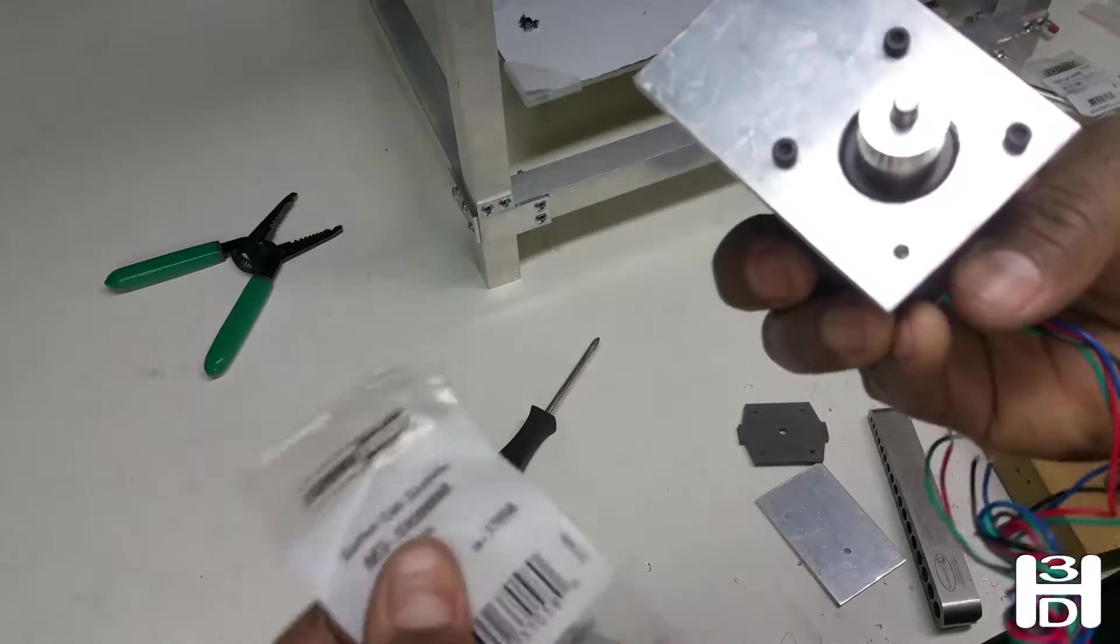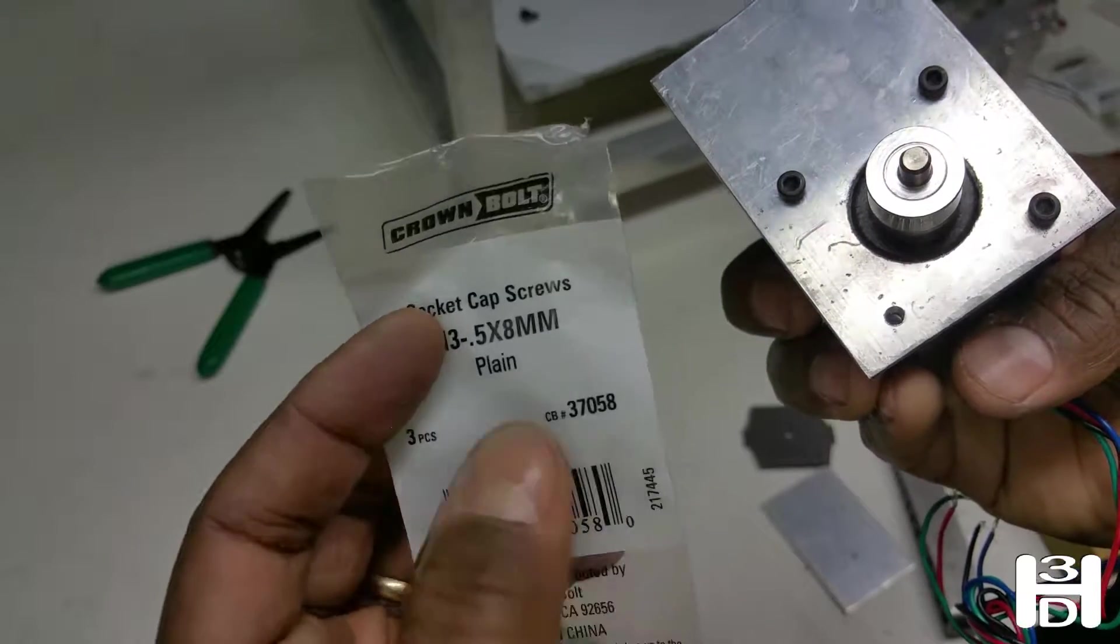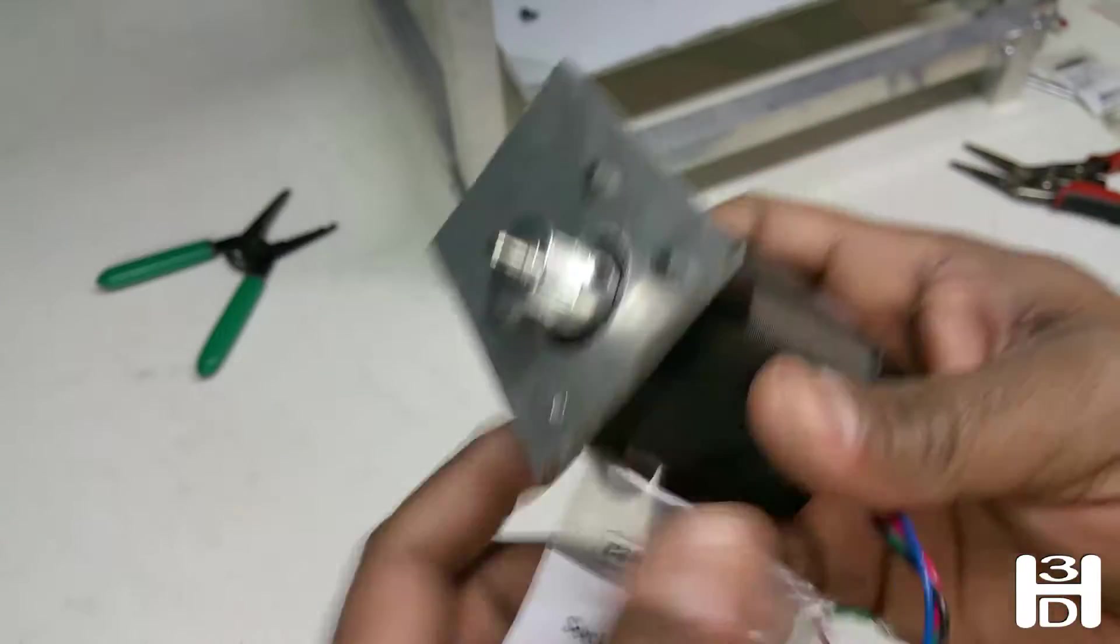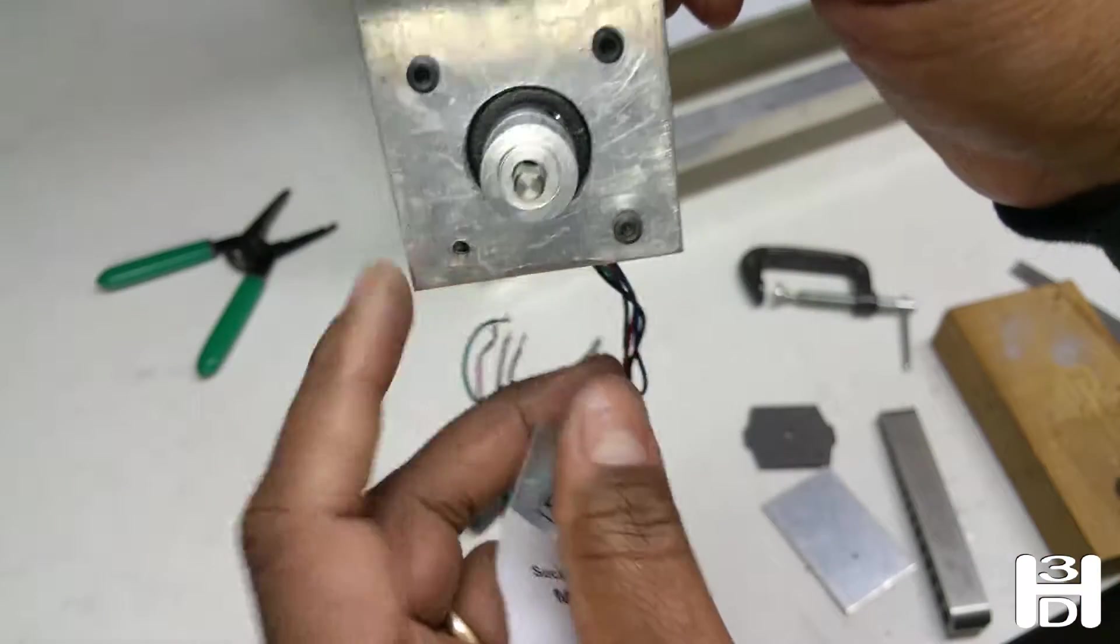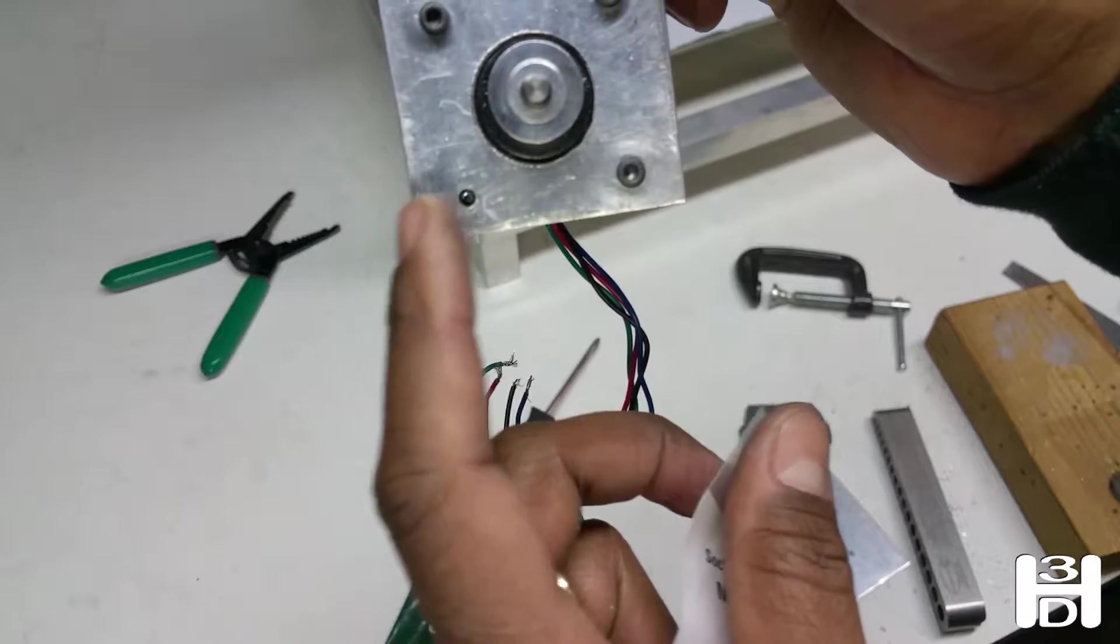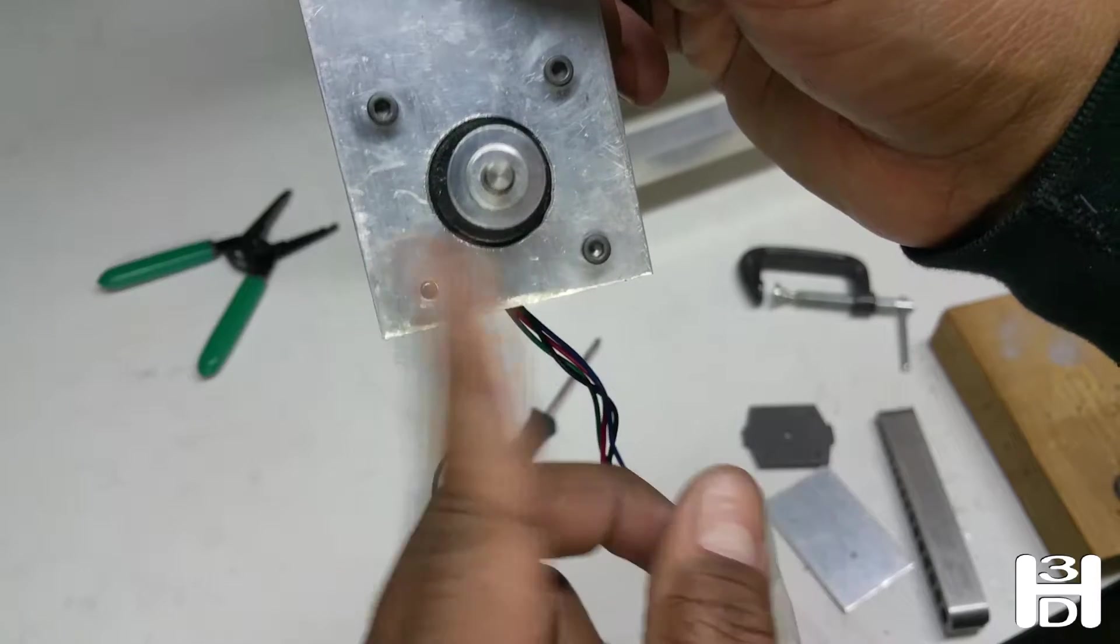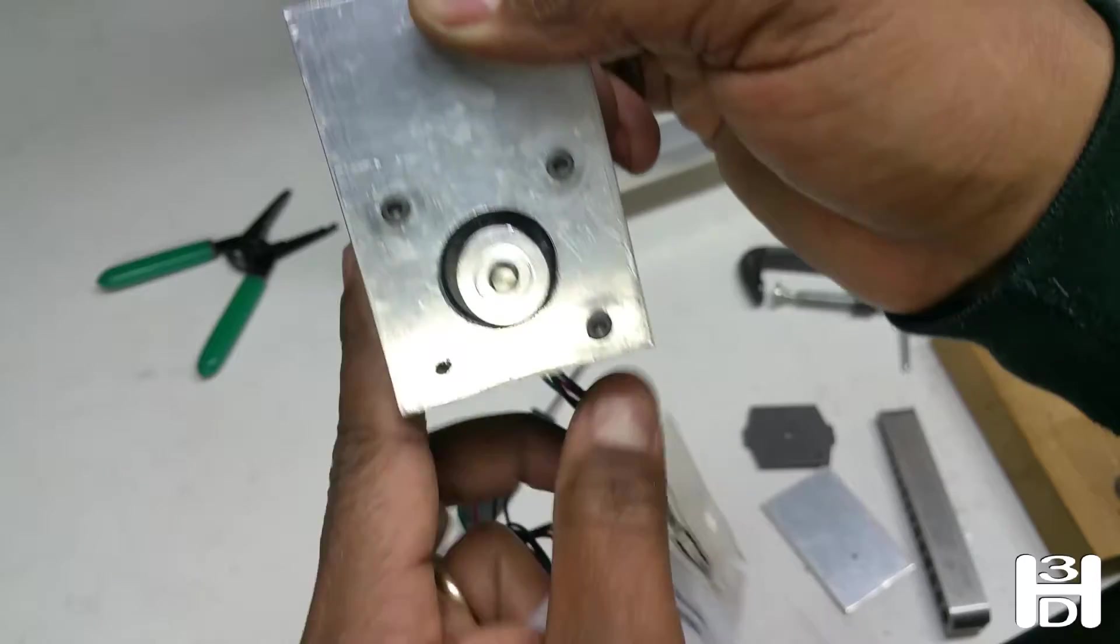When mounting it, we'll use some M3 half millimeter pitch by eight millimeter length screws. We'll only use three because we want to leave this position out to allow room for the belt and for the carriage to slide as far as possible back towards this pulley. This will get in the way because the clearance tolerance is quite tight where this will be mounted.